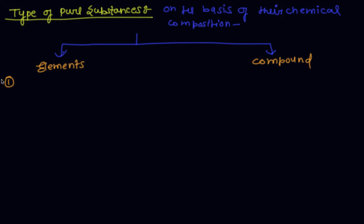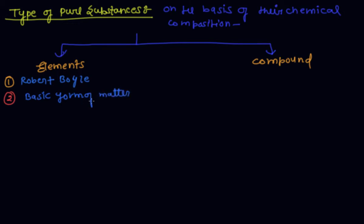Robert Boyle was the first scientist to use the term 'element' in 1661. An element is a basic form of matter that cannot be broken down into simpler substances by chemical reactions.